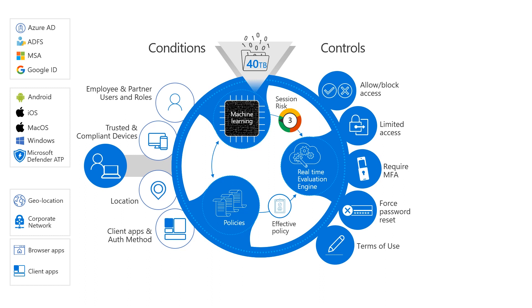There are the conditions, which is when the policy is going to apply. This can be the location, type of application that you're on, or any detected risk. And that risk is really interesting because that's something we get from all of the analysis and intel that we have across organizations using Azure Active Directory, as well as our consumer identity offerings — tons more data than any individual organization can have. And then we can use that to inform smart risk-based access decisions based on risk, or things configured by location or app.